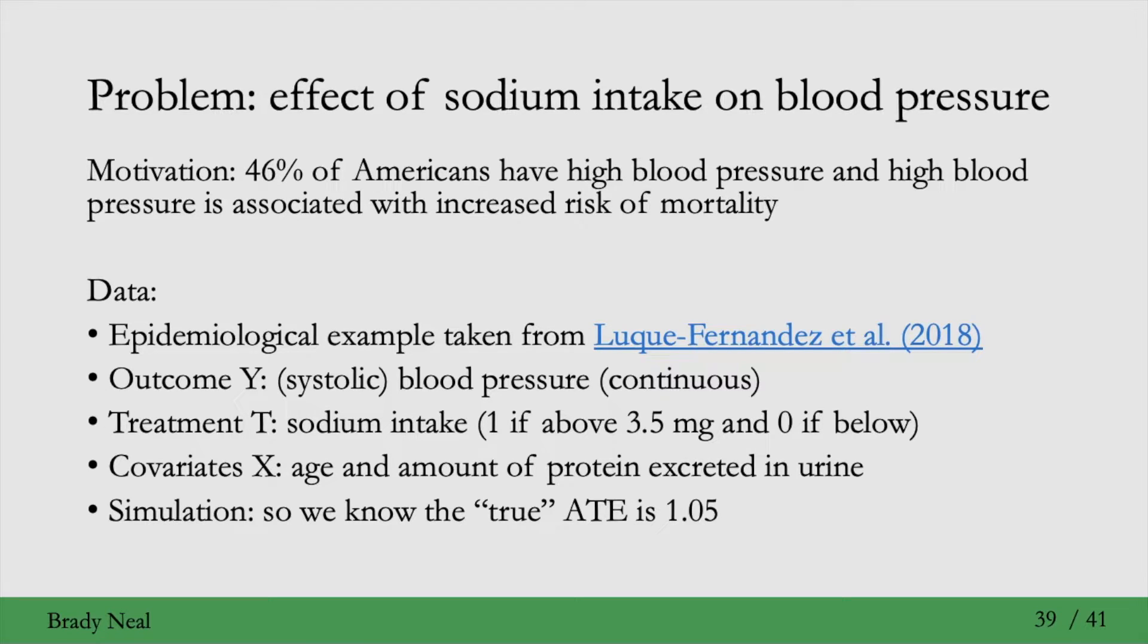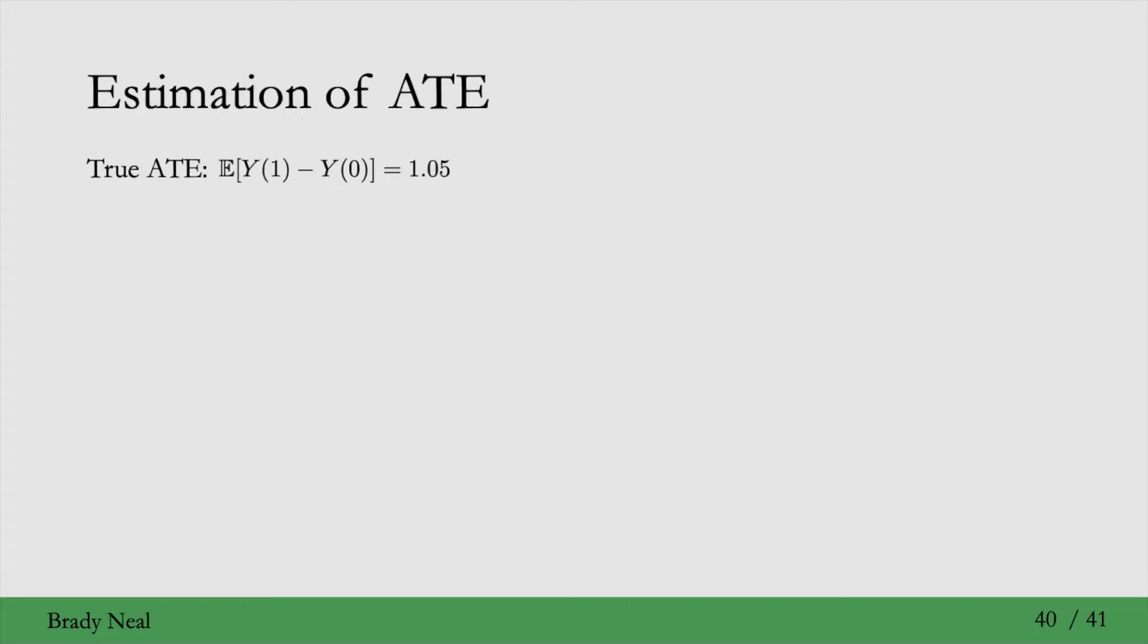Now that we've specified all the details of this problem, let's actually get to estimation of the ATE. The true ATE is 1.05. First, we have to identify the average treatment effect by using the adjustment formula to turn it into a statistical estimate. So the average treatment effect is a causal estimate, we turn it into a statistical estimate.